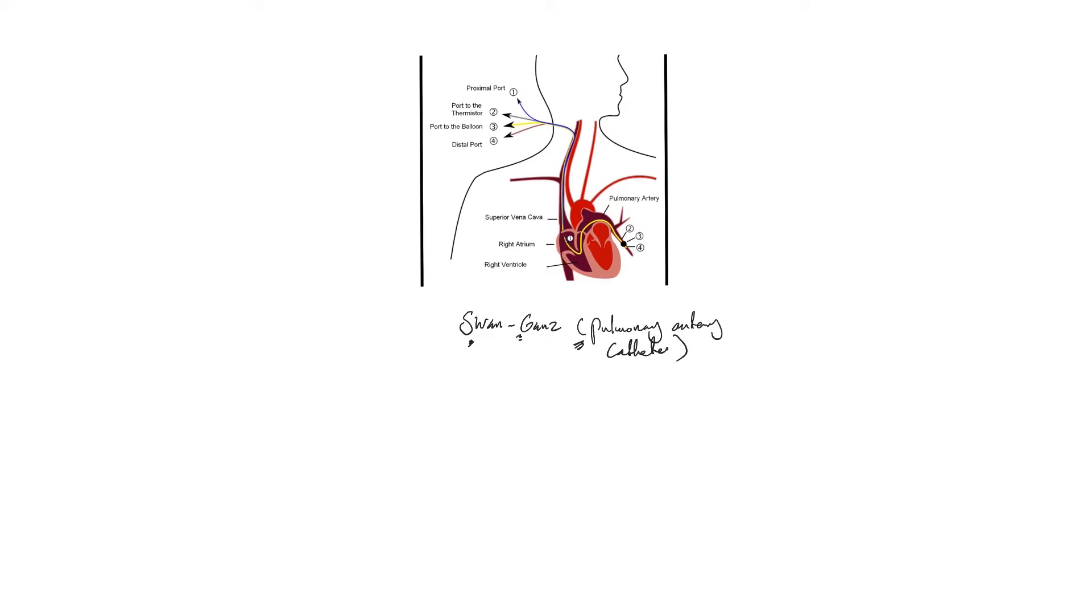As you see, the catheter is usually inserted through a major vein - either subclavian, IJ, or femoral - and goes through the superior vena cava or inferior vena cava into the right side of the heart.